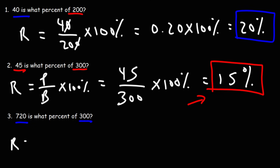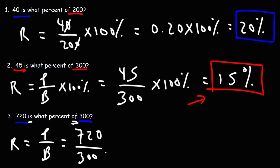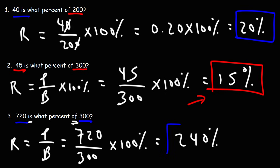Using the formula, the rate is equal to the part over the base. The part is the number associated with the word 'is,' and the base is the number associated with the word 'of.' So it's 720 divided by 300 times 100 percent, which gives us 240 percent. So 720 is 240 percent of 300. That's a simple formula you can use to calculate percentages.